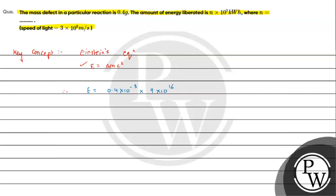So this value we can get in Joules. So if we simplify this, we can have this value as 0.4 times 10 raised to minus 3 times 9 times 10 raised to 16. This will be 3.6 times 10 raised to 13, and this will be in Joules.